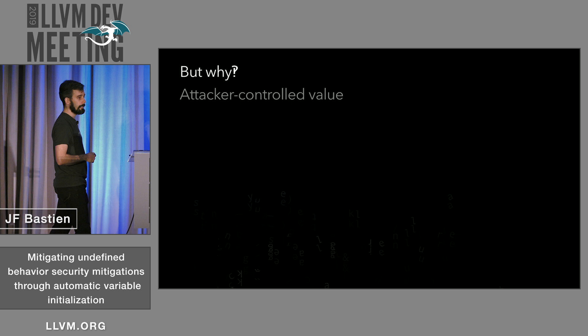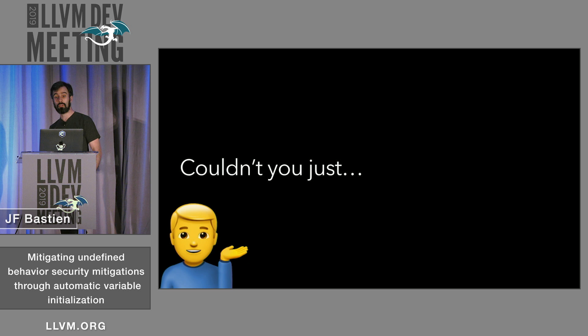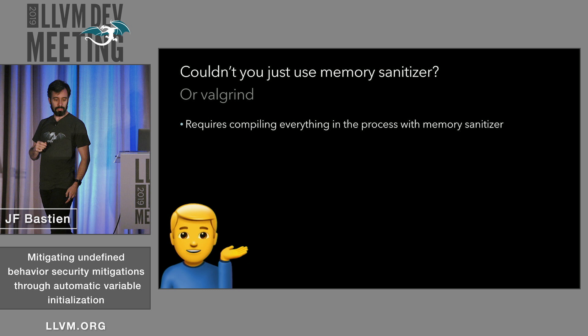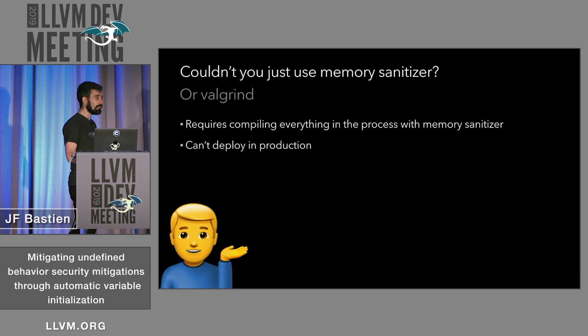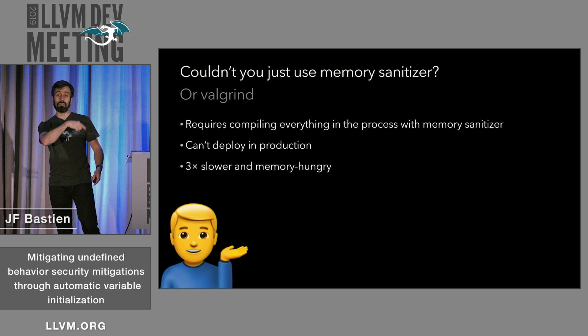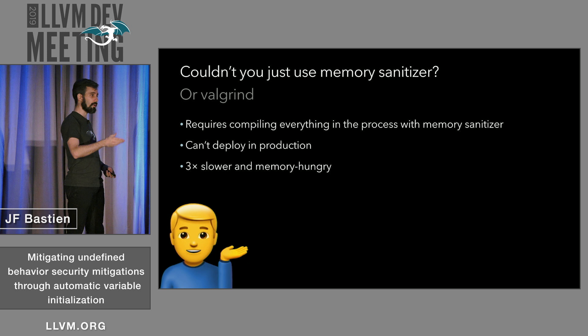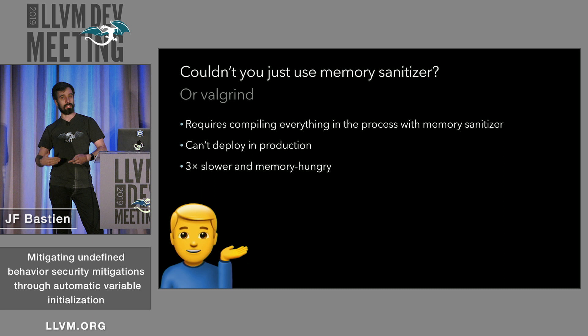When I show these examples, people say: couldn't you just use memory sanitizer or Valgrind? Well, that requires recompiling everything in the process with memory sanitizer, and you can't deploy it in production — you can't ship memory sanitizer on a laptop or phone. It only protects what you find in your testing environment, and it has a 3x slowdown and is really memory hungry. You should use those tools, but they don't actually prevent the problem. We know there are exploits in the wild for this type of bug, and some of those code bases use these tools yet still have these bugs.